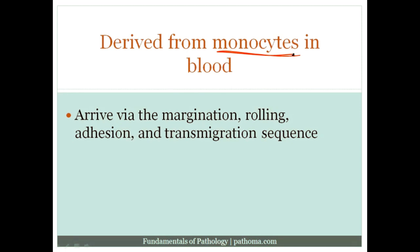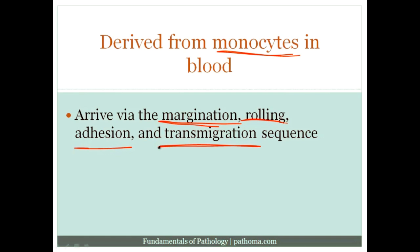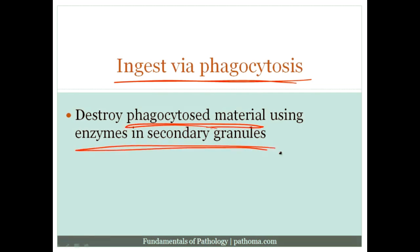Macrophages enter tissue the same way neutrophils do — via margination, rolling, adhesion, and transmigration. Once they get into tissue, they ingest via phagocytosis and destroy the phagocytosed material using enzymes in the secondary granules. For the most part, macrophages don't do a lot of oxygen-dependent killing; their primary mechanism is oxygen-independent using enzymes in the secondary granules. One key enzyme is lysozyme, which is very useful for macrophages to kill phagocytosed material.